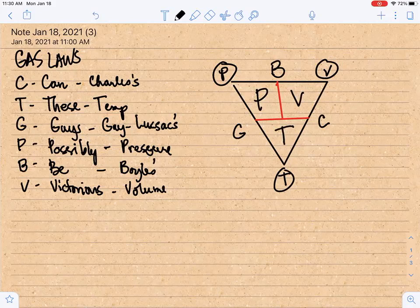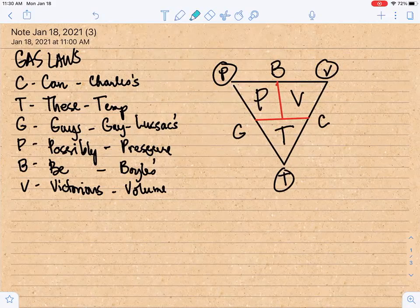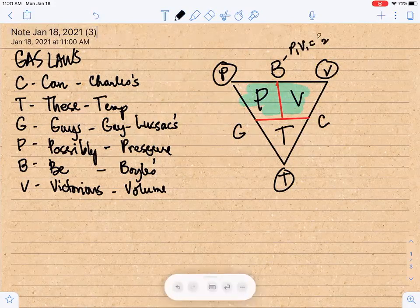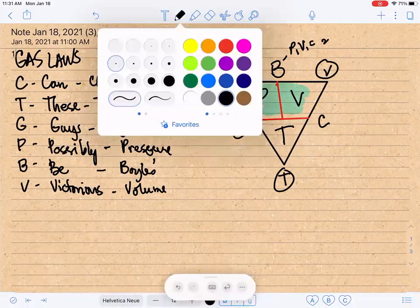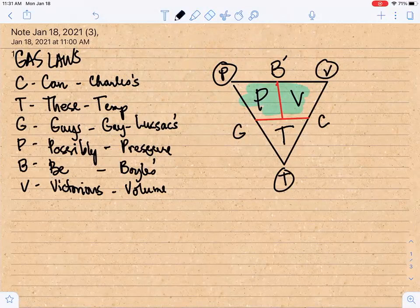Now, how does this help? So B represents Boyle's law. And Boyle's law is an inverse relationship. And you've learned the mathematical representation of that - that's multiplying P and V. So therefore, we have P1V1 is equal to P2V2.